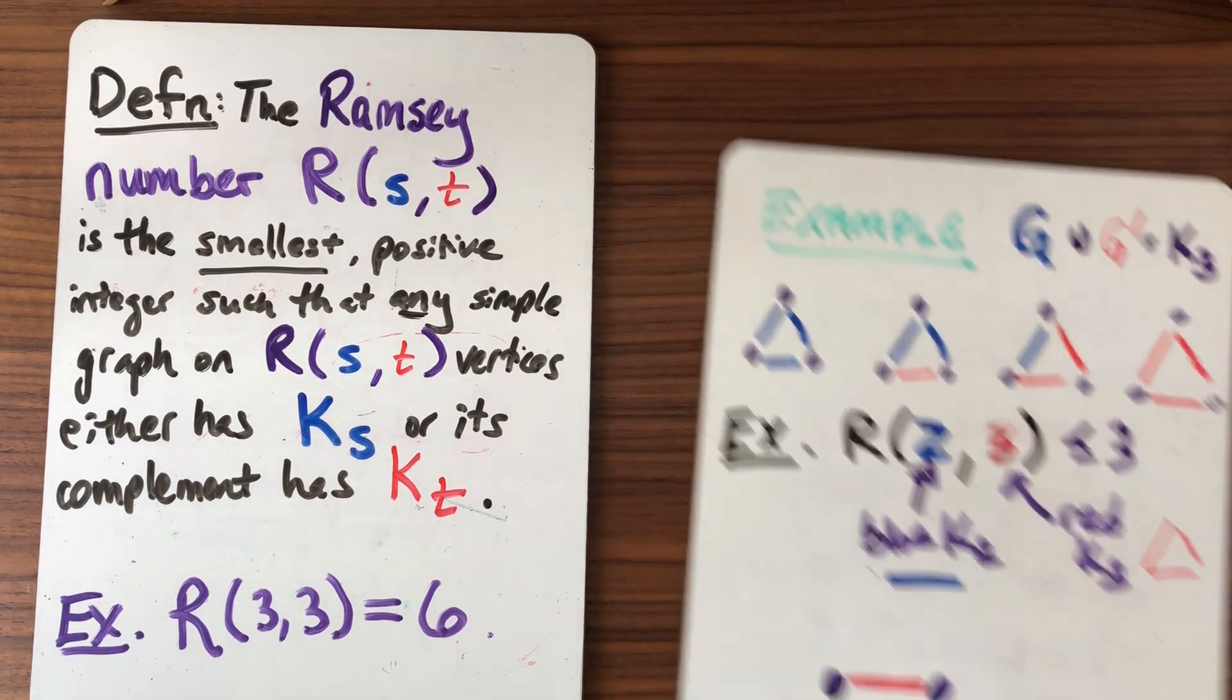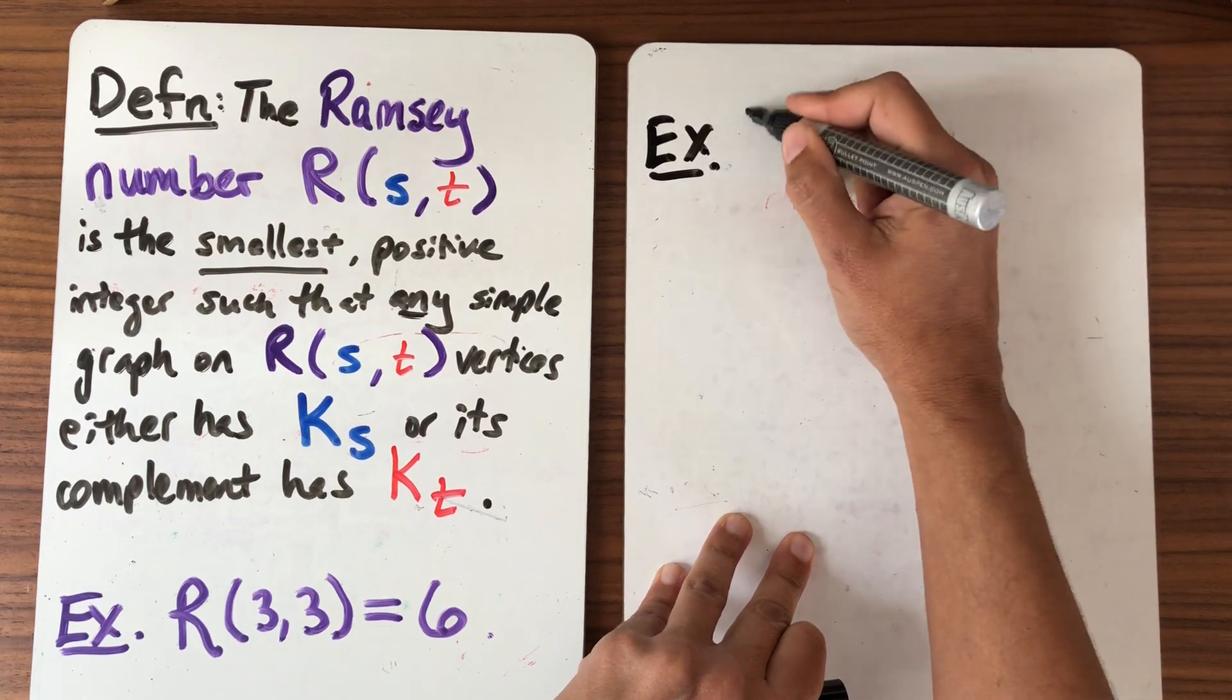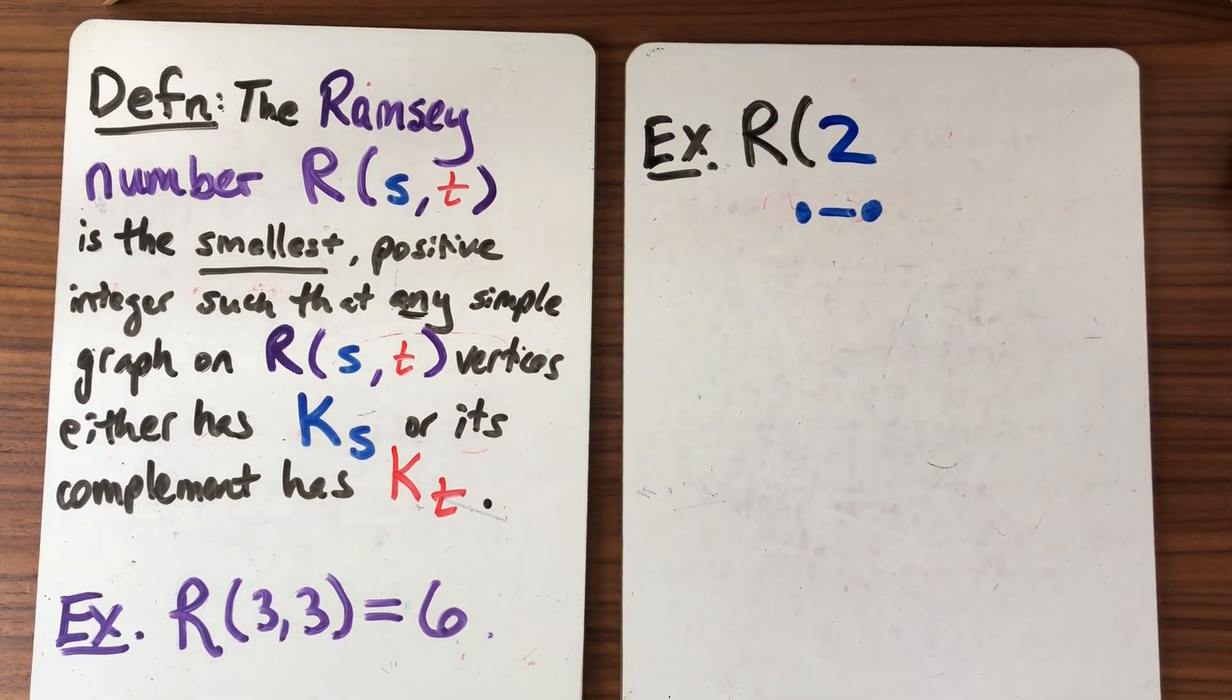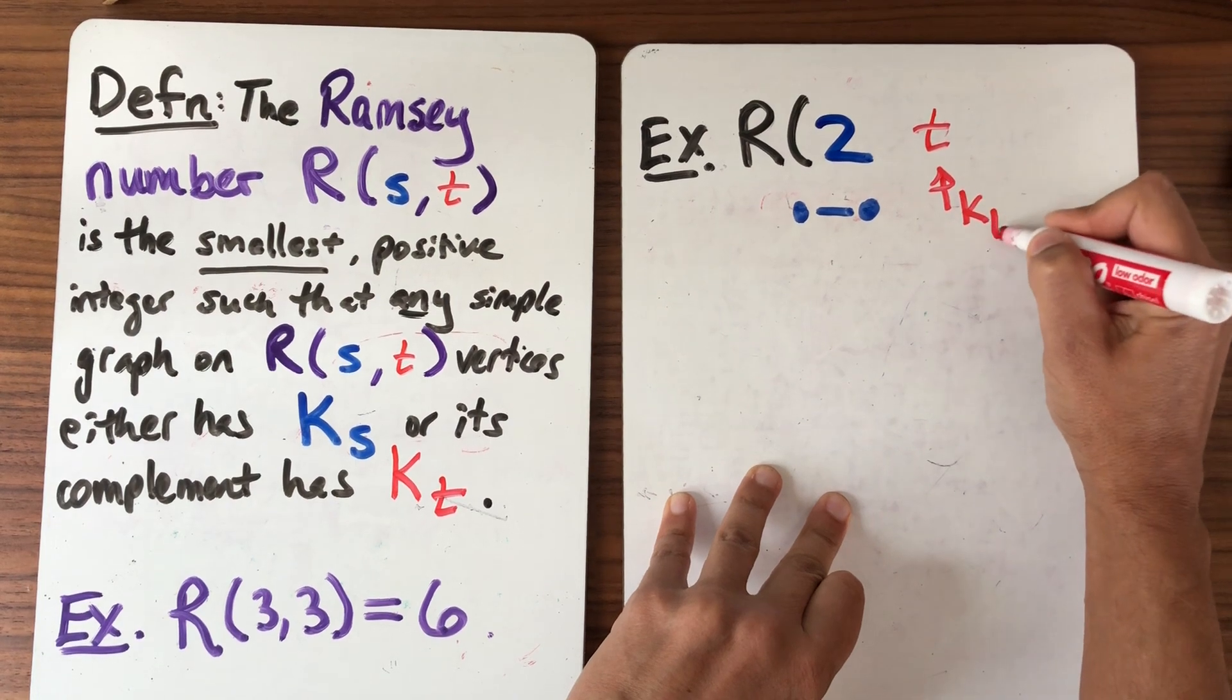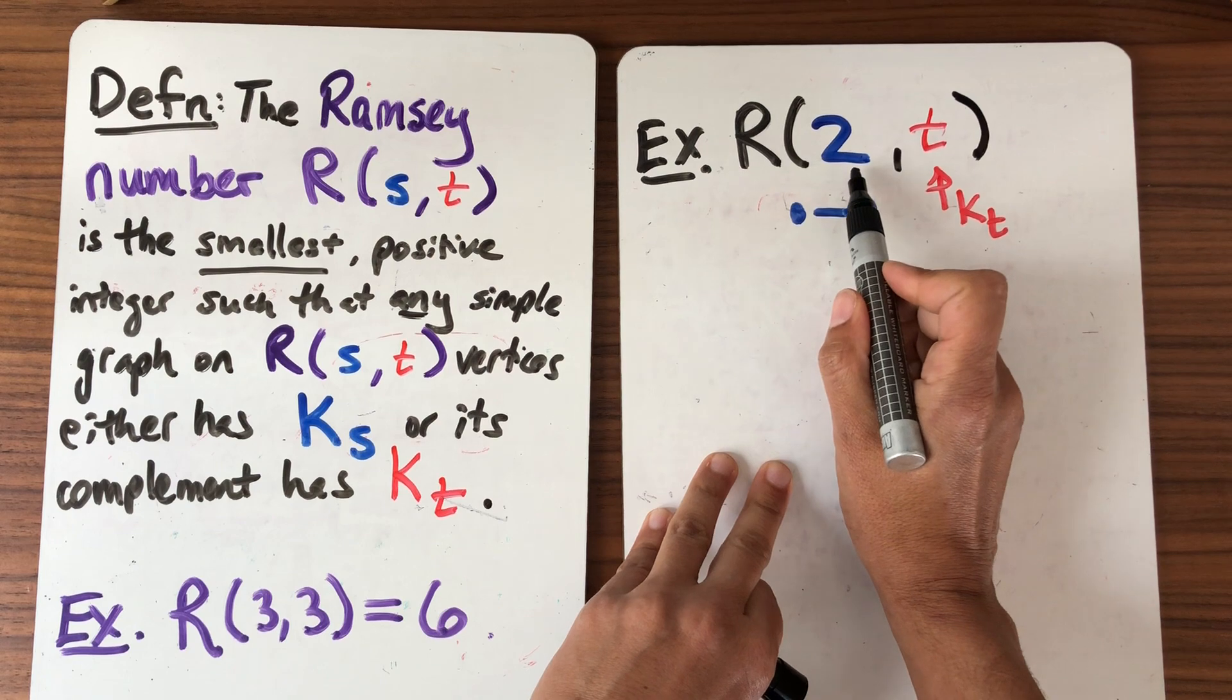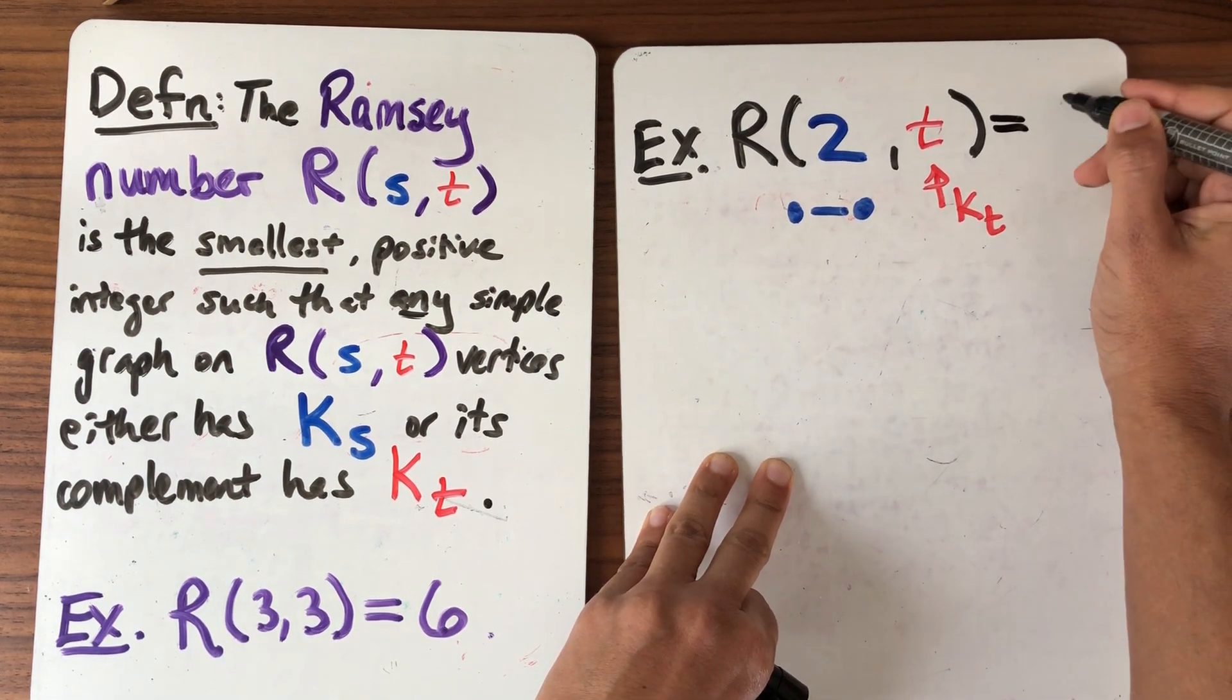So let's get some families of Ramsey numbers that exist. So building on the intuition that we just developed here let's do an example and let's compute maybe a bigger class of things. So let's take R of let's say we want 2. So now that means I'm looking for a single edge that's blue and we'll let the other number be just a generic. So this means that I'm looking for K_t where t is the complete graph on t vertices. Okay so what is this number? So this is saying that whatever graph I draw on this many vertices either I've used a blue edge or I have the complete graph K_t. So I claim this is equal to t.